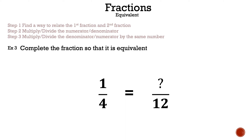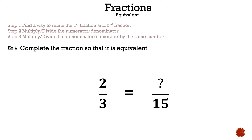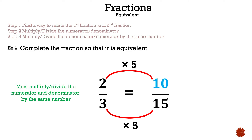Complete the fraction so that it is equivalent. One-fourth equals something over twelve. We need to relate the first and second fraction — how does four become twelve? Times three. Since we did that to the denominator, we now need to do it to the numerator: one times three gives me three. Now let's look at another: two-thirds equals something over fifteen. We compare the denominators — three and fifteen. Times five: three times five gives me fifteen. Whatever we do to the bottom we have to do to the top, so two times five gives me ten.